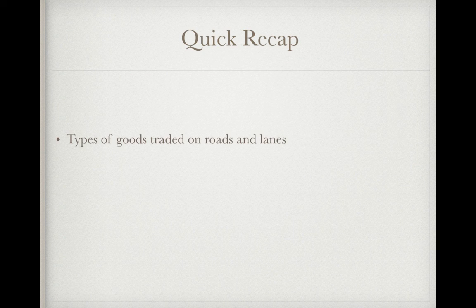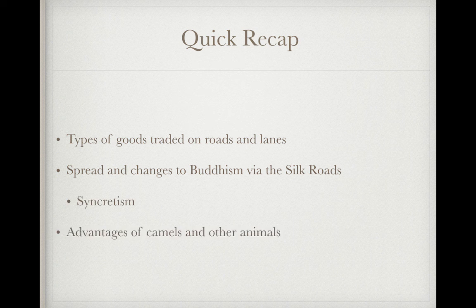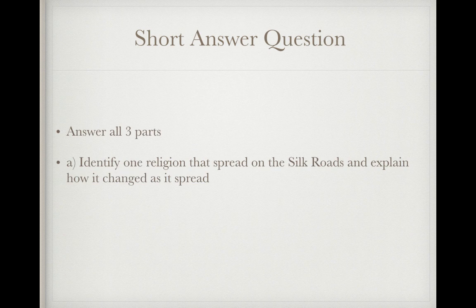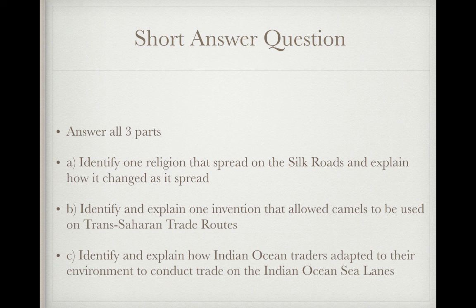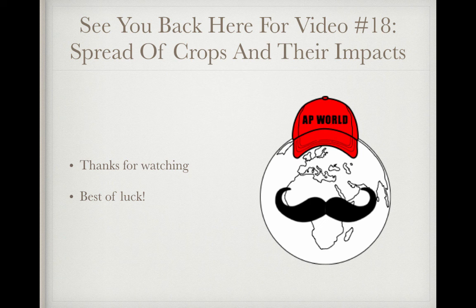Okay, we'll finish up with a quick recap: types of goods traded on roads and lanes; spread and changes to Buddhism via the Silk Roads — that's an example of syncretism; advantages to camels and other animals; and technology and knowledge for sea lane trade. We'll end with a short answer question — answer all three parts. Part A: identify one religion that spread on the Silk Roads and explain how it changed as it spread. Part B: identify and explain one invention that allowed camels to be used on trans-Saharan trade routes. Part C: identify and explain how Indian Ocean traders adapted to their environment to conduct trade on the Indian Ocean sea lanes. Thank you very much for watching — look forward to seeing you back here for the last video of period two: video 18, Spread of Crops and Their Impacts. Best of luck as always, thanks for watching, and have a good day.